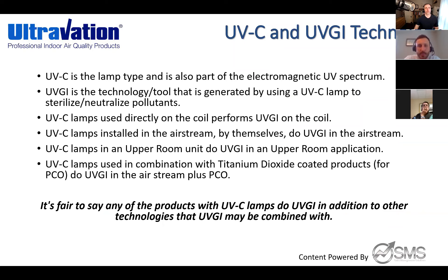To drive home the UVC and UVGI connection in simple terms: UVC is the lamp type and part of the electromagnetic UV spectrum. UVGI is the technology generated by using a UVC lamp to sterilize or neutralize pollutants. UVC lamps on the coil perform UVGI on the coil. UVC lamps in the airstream do UVGI in the airstream. UVC lamps in an upper room unit do UVGI in an upper room. Combined with titanium dioxide, UVC lamps also do PCO in addition to UVGI.